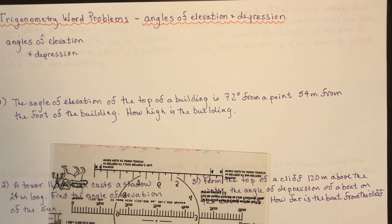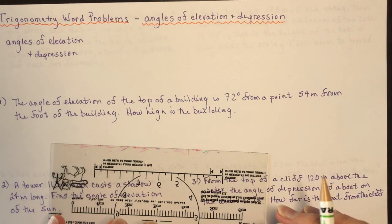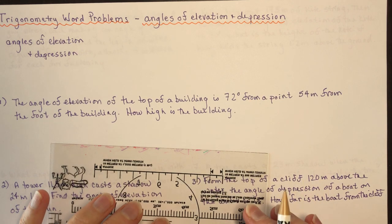Trigonometry word problems. Today I'm going to do seven different word problems. We're going to talk about angles of elevation and depression, and in the next lesson I'll do some more word problems that get progressively more difficult.